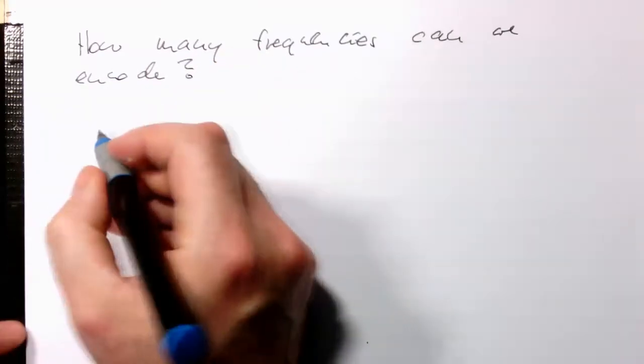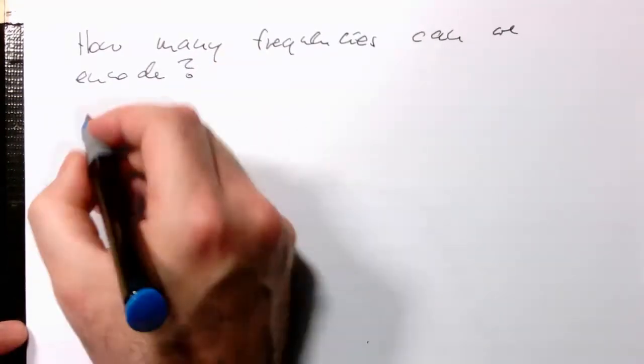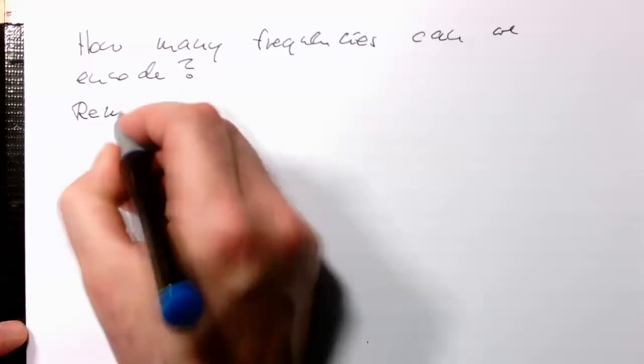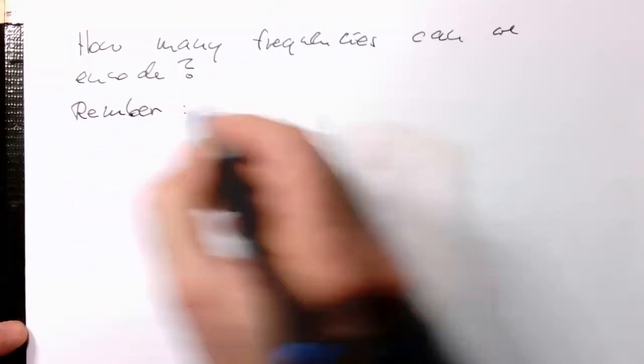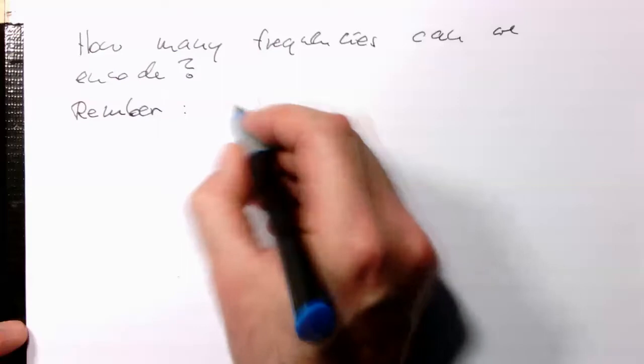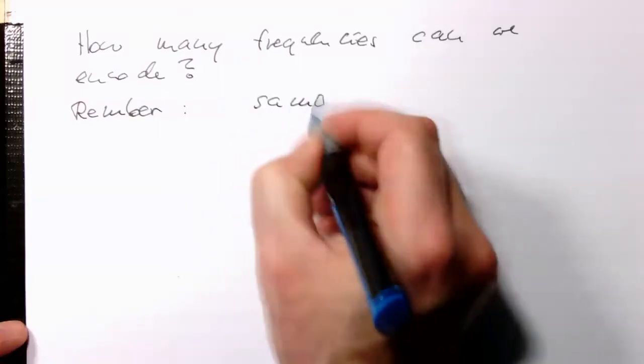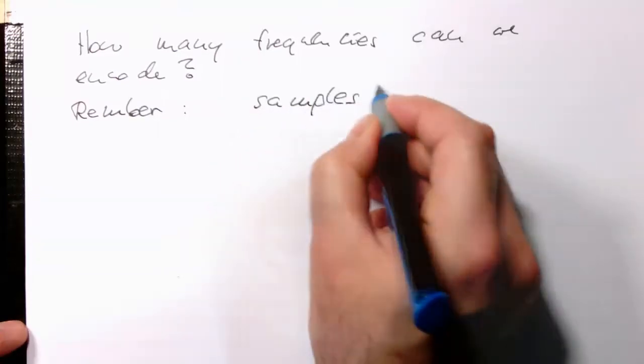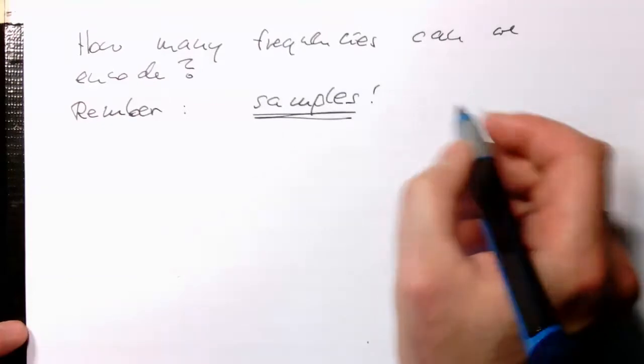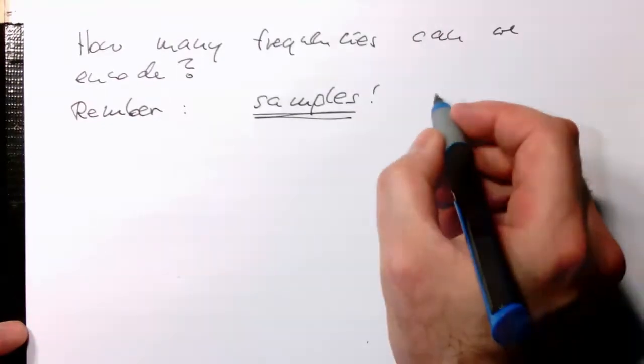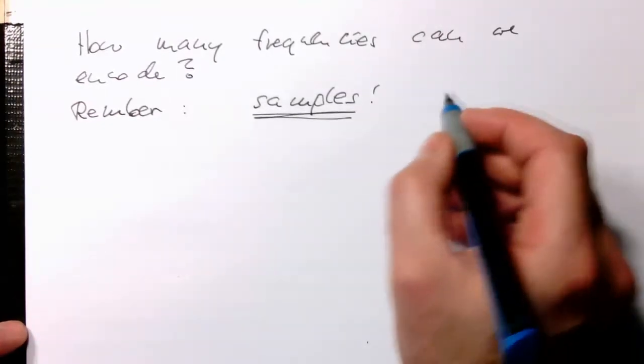Remember, we are in a sample system here. So we've got samples, and we've got also the symbol duration t. Symbol duration t.